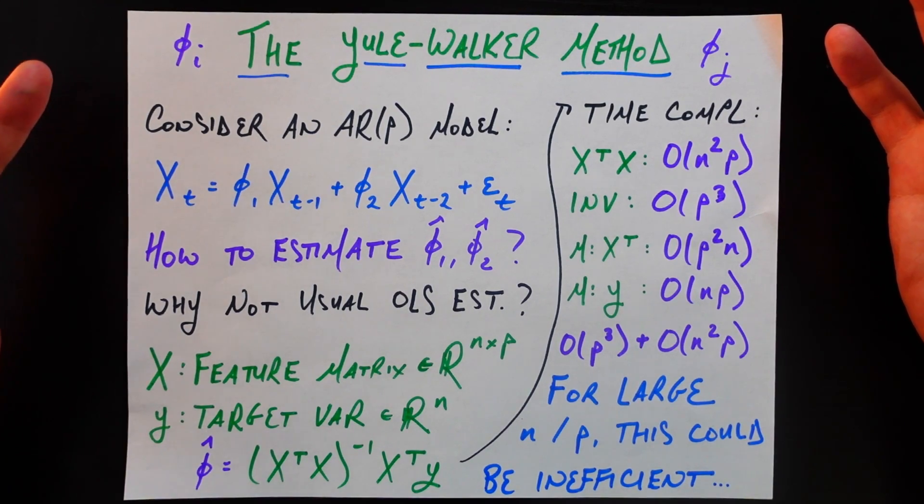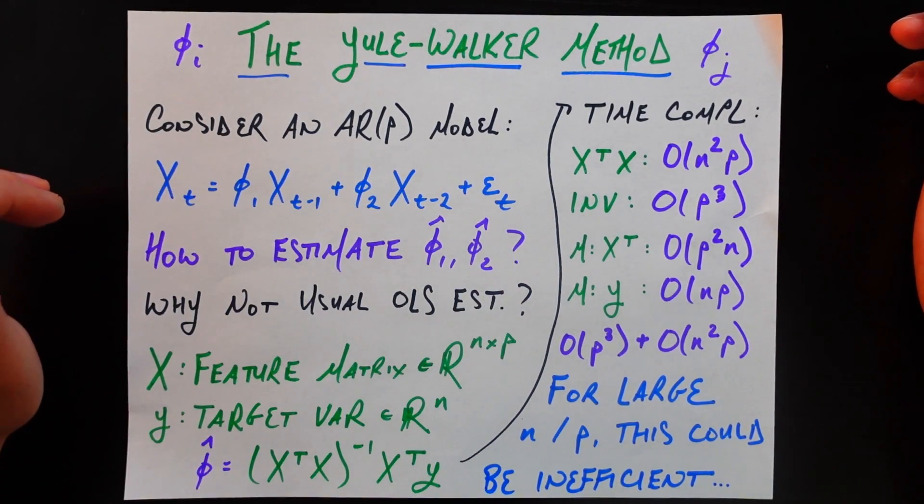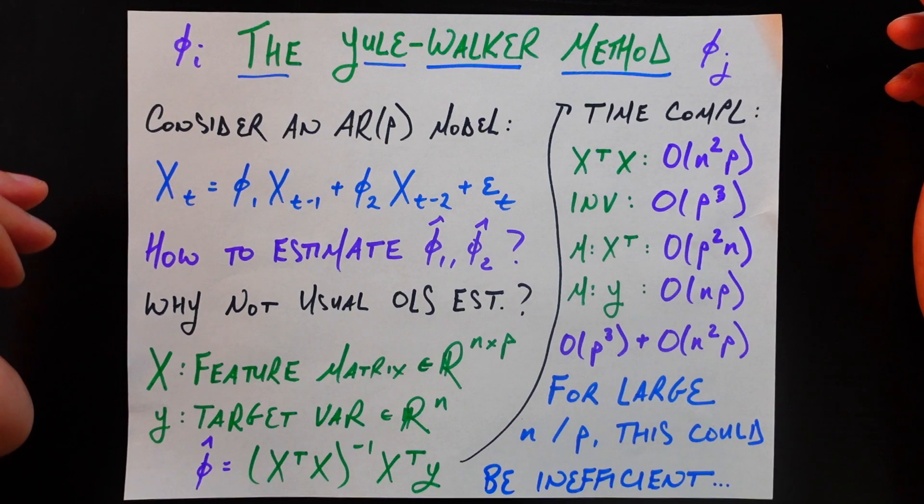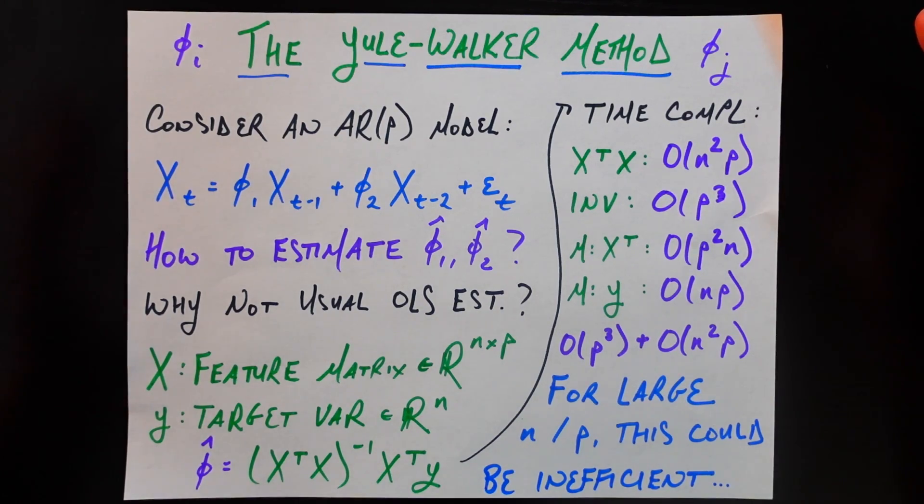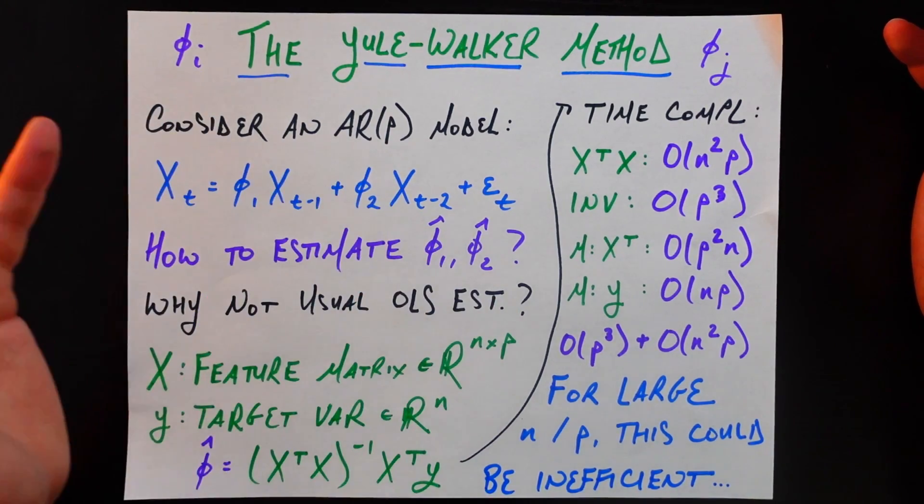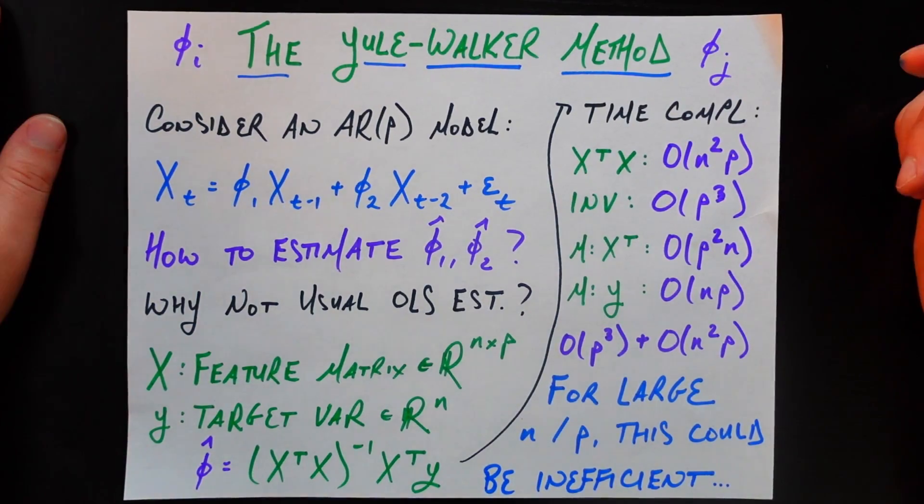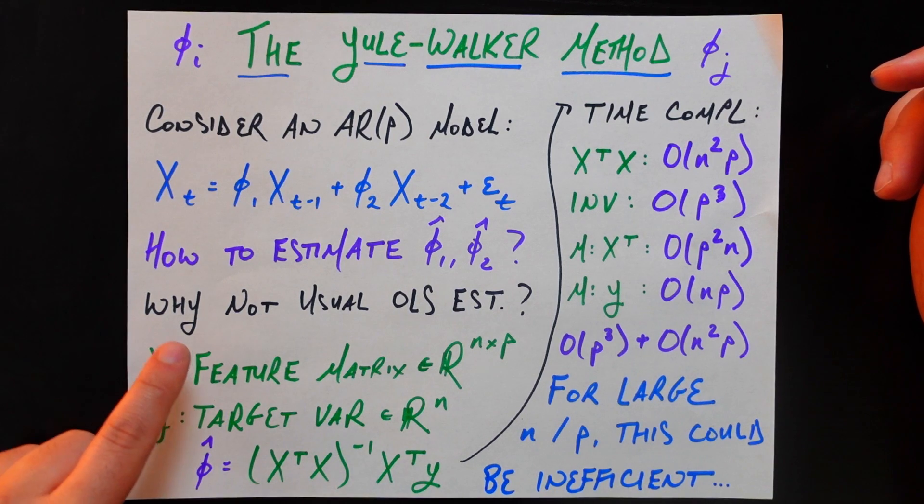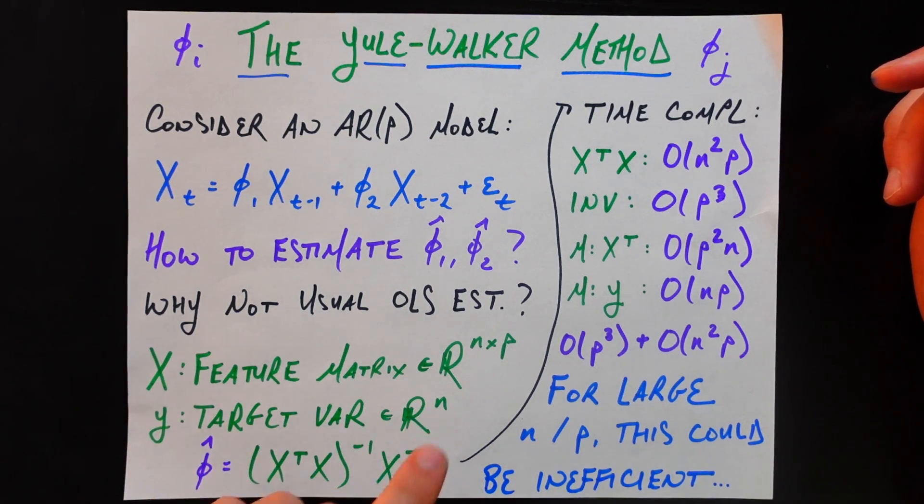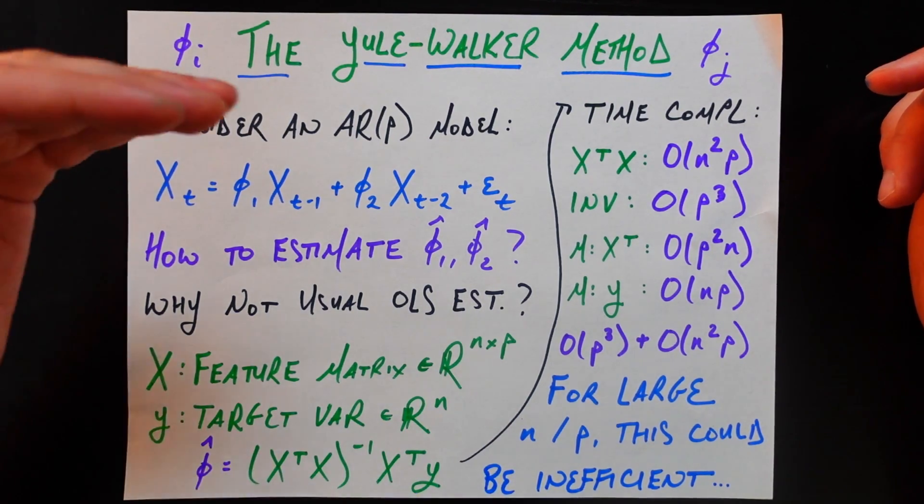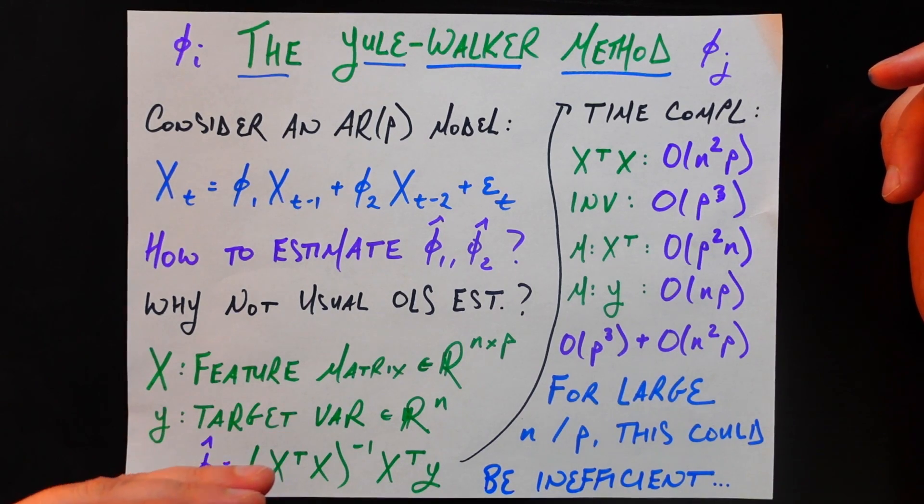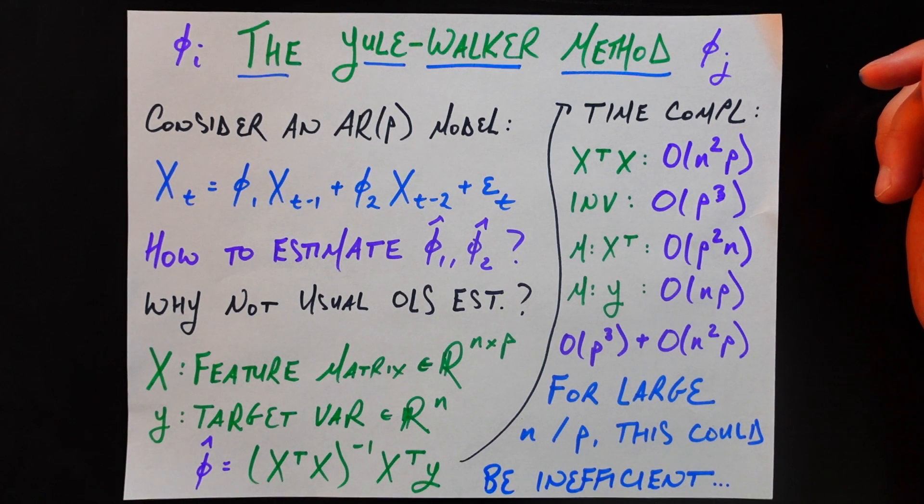So the most easy, most dumb way I can think of is, yeah, this is an AR(2) process, but more generally it's just a linear model of two parameters and two features. So why don't we just fall back on the way we estimate the parameters of linear models in OLS. And going back to that notation, we usually call big X our feature matrix, which is an N by P matrix. N being the number of observations we have and P being the number of features we have. Here that's the same as the lag order of this AR(P) process.